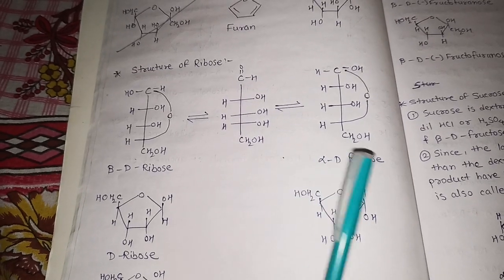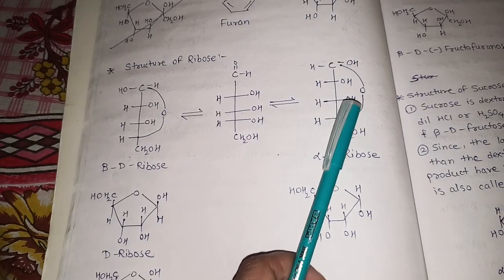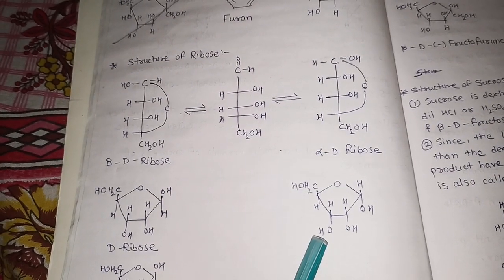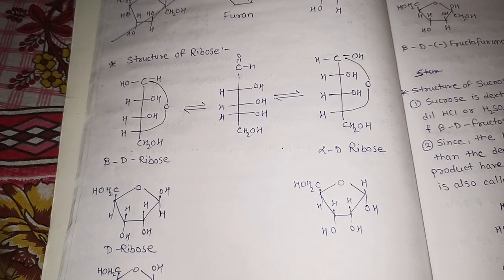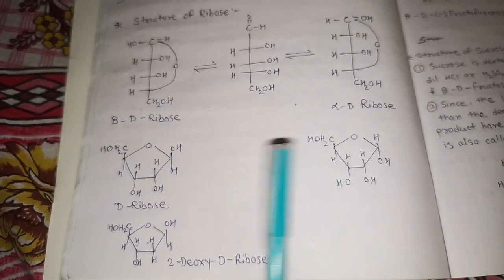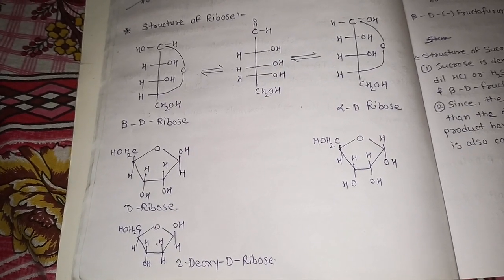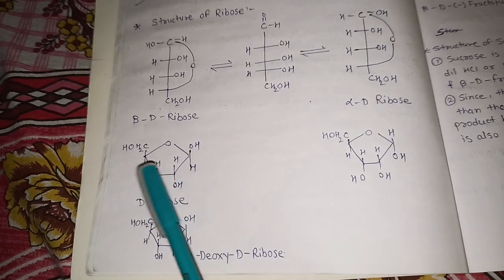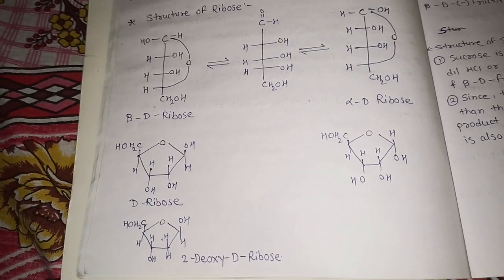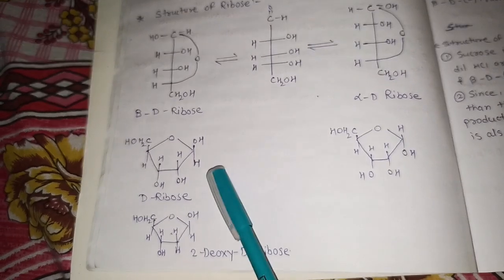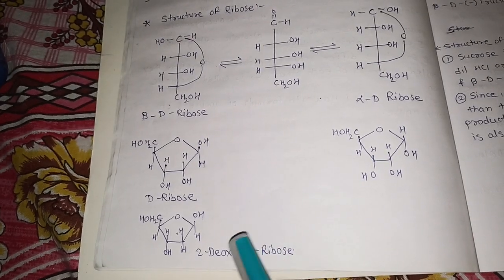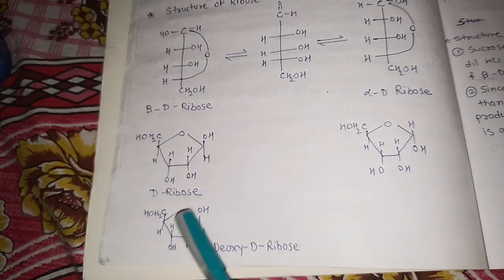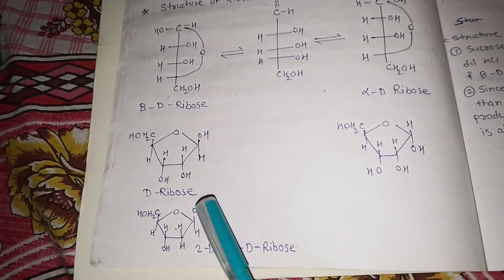Since ribose has 5 members in the ring — 4 carbons and 1 oxygen — it forms a furanose structure. Applying the same rules, OH on the right is written below and CH2OH is always written above. In the beta form, the OH at the anomeric carbon goes above and H below. Beta-D-ribose is used in RNA, and 2-deoxy-D-ribose, where the OH at C2 is replaced by H, is used in DNA.